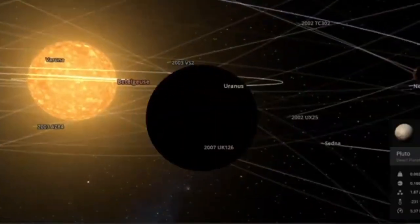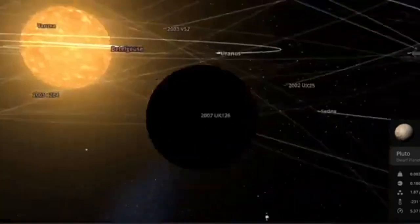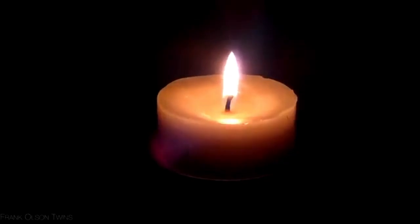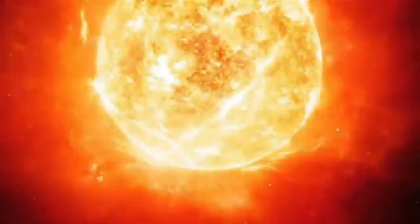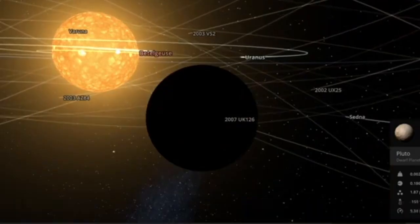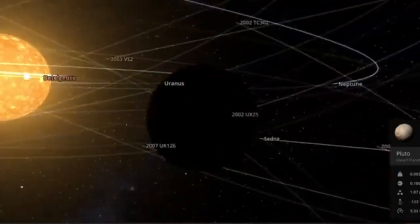But there was a problem. Betelgeuse is so huge and bright that spotting a much smaller, dimmer star right next to it is extremely difficult. However, using a special instrument called Allopeak, attached to the powerful Gemini North Telescope in Hawaii, scientists were finally able to spot something extraordinary. They directly observed a faint companion star near Betelgeuse. They named it Sawara.